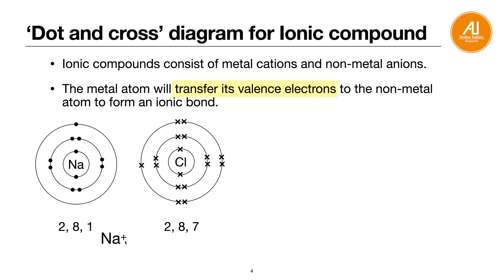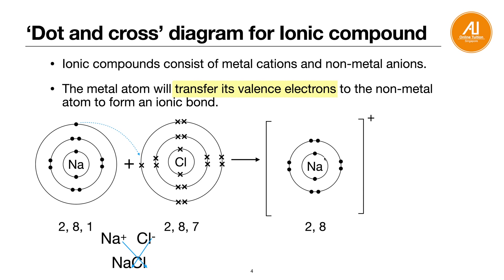Sodium is group 1, so it's Na+. Chlorine is Cl-. When you cross them you get NaCl. They will transfer the valence electron from sodium to chlorine — 1 valence electron transfers over. In the end, sodium is left with 2,8, with a square bracket and plus charge, because it has 1 less electron compared to its original atom, so it is now positively charged.